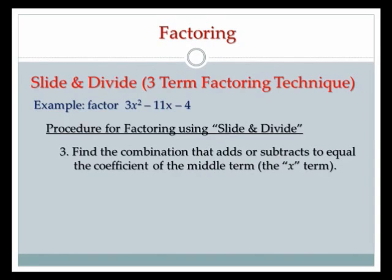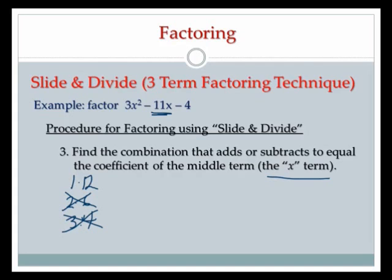I want to find the combination that adds or subtracts to equal the coefficient of the middle x term, which needs to be negative 11. Two plus six is 8, six minus two is 4, two minus six is negative 4 — no way to get negative 11 with 2 and 6. Three plus four is 7, four minus three is 1 — that won't work either. So I'll use 1 and 12: positive one and negative 12, since one minus 12 equals negative 11.